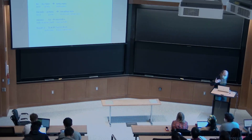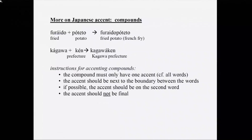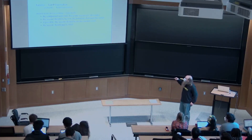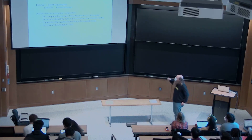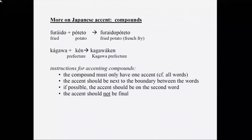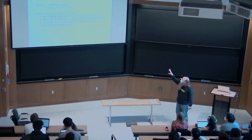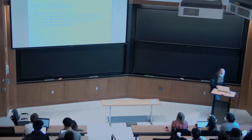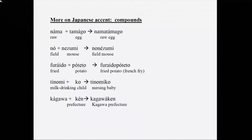There is a set of rules for where accent goes in these compounds. The rules go something like this: there's only going to be one accent, it needs to be next to the boundary between the words, and if possible it should be on the second word — after the boundary. But you don't do that if it would result in the accent being on the last syllable.